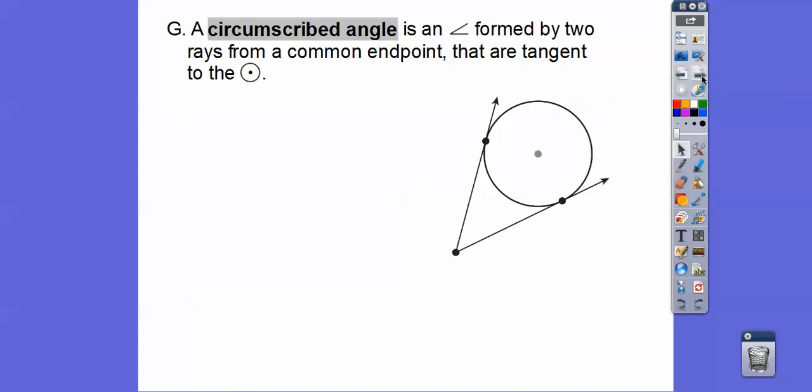A little bit more. Okay, a circumscribed angle. This is new in our textbook. It's not hard. A circumscribed angle is an angle that's formed by two rays from a common endpoint that are tangent to the circle. So here's two rays, and so this angle right here is our circumscribed angle.